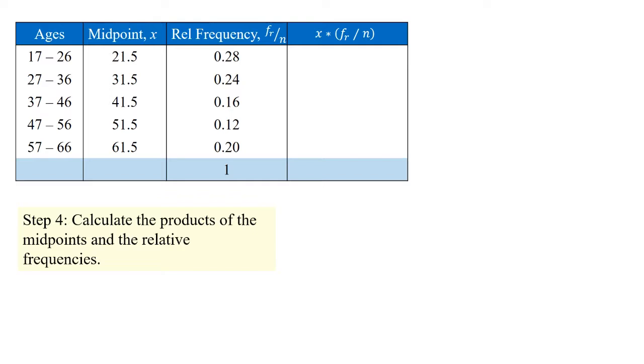So we have 21.5, the x value, and we multiply it by the relative frequency, which is 0.28, or 28% of the total. 21.5 multiplied by 0.28 gives us a total of 6.02, which we insert now into the table.